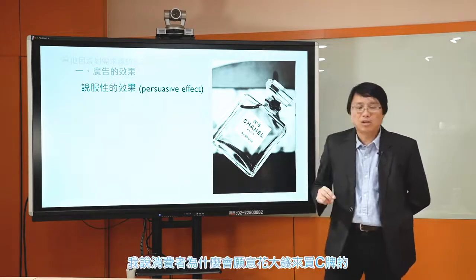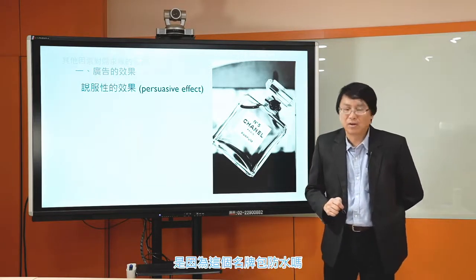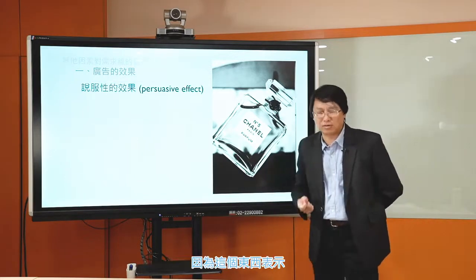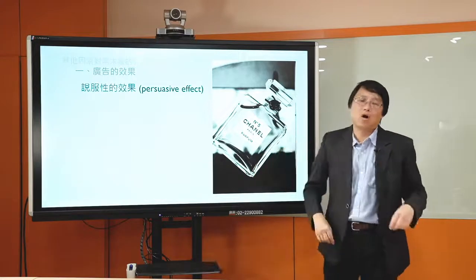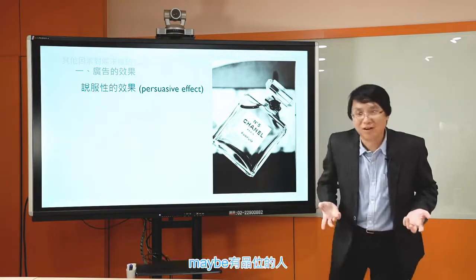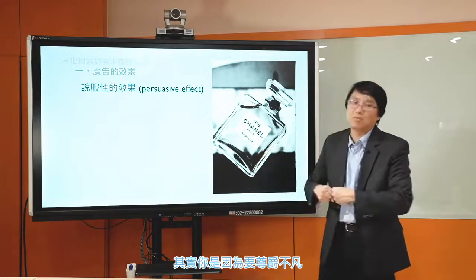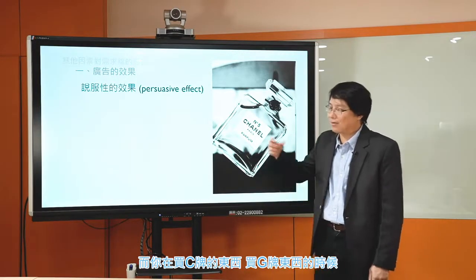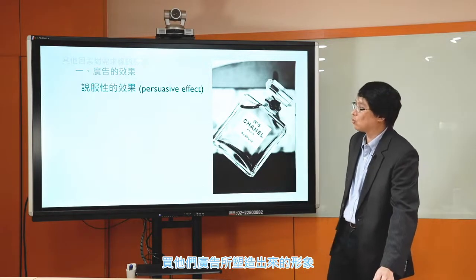還有其他的因素讓廣告持續還有新的作用。那哪些類型的產品的廣告會有這種特性呢？比如像C牌的東西。我們在前面講奢侈品或炫耀品的時候，會講到C牌的名牌包，他們的廣告基本上就會透過這樣的渠道發揮作用。消費者為什麼願意花大錢來買C牌或G牌的名牌包？是因為比較耐用、防水、比較漂亮嗎？很大的一個理由是尊爵不凡——這個東西表示你是有錢人。那這個有錢人的形象是怎麼出來的？透過不斷的廣告去塑造說你買C牌、G牌的東西表示你是有錢人、有品味的人。所以某種程度上你在買C牌或G牌的東西時，其實是在買他的廣告所塑造出來的形象。